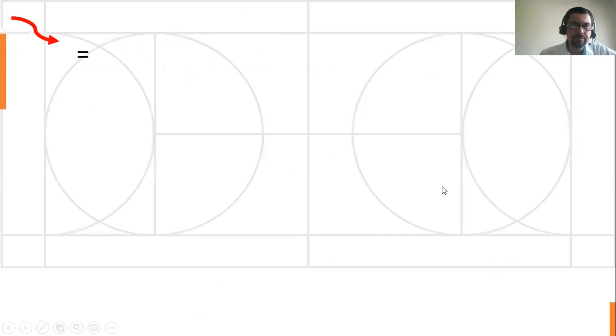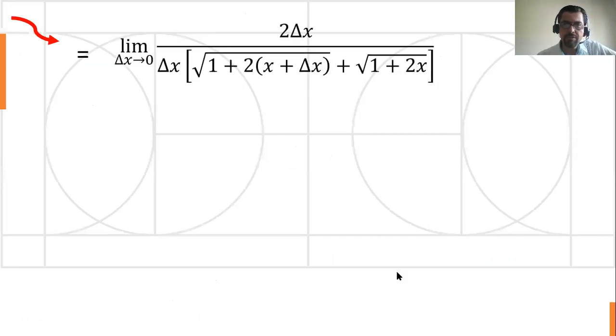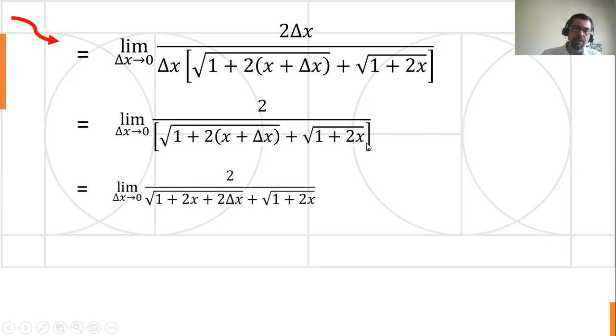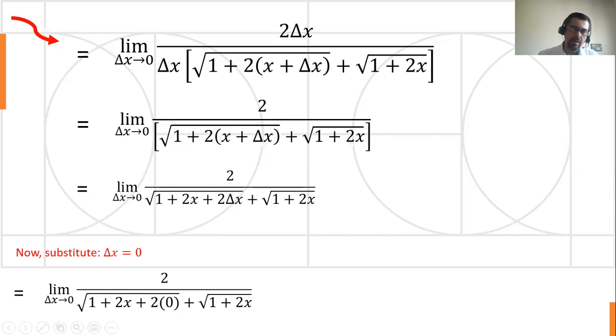So if we move on, we can divide delta x divided by delta x. That gives us one, one times two is two. And then we're going to have a nicer algebraic expression. Now we can give delta x the value of zero. Just before that, we're going to multiply two times x and two times delta x. And now since we don't have a delta x multiplying in the denominator, we can substitute delta x for zero. So this is going to be getting nicer and nicer.